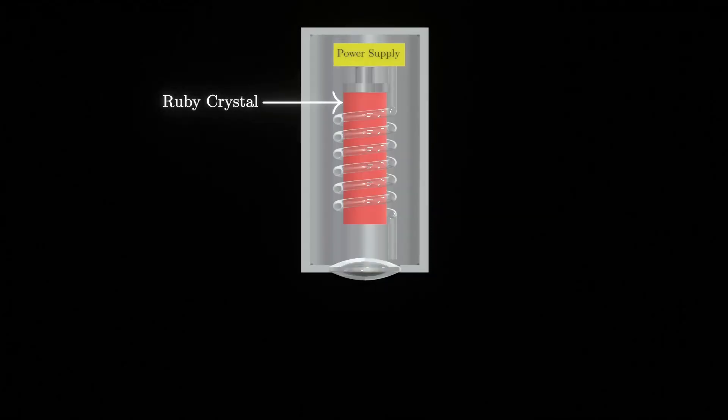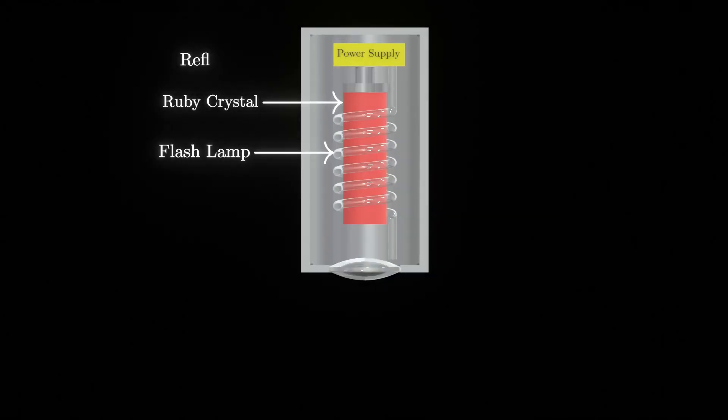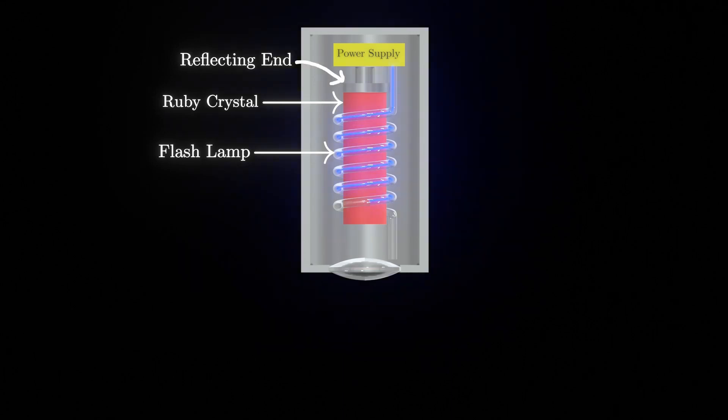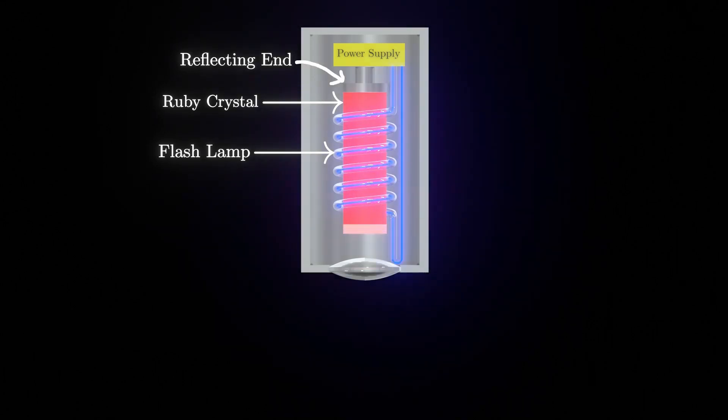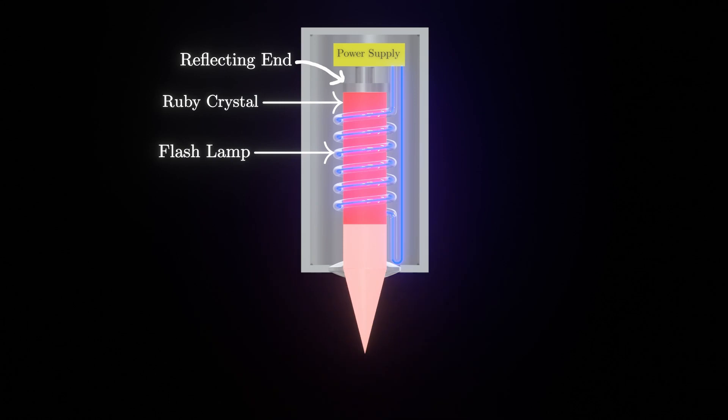Namaste guys. In this video, we're going to learn what laser beam machining is, its different components, and how it works. Laser beam machining is a process in which a laser beam is used for machining purposes.